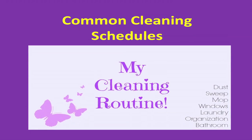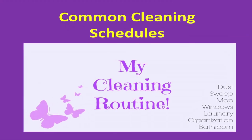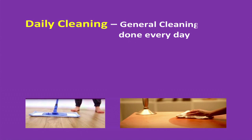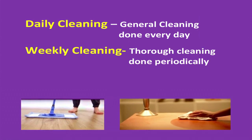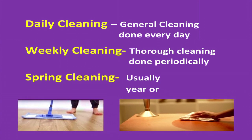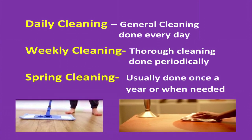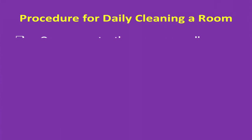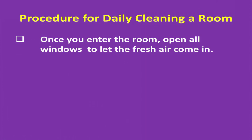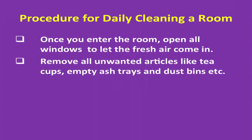Now let's study about the schedule of cleaning. Cleaning is done on three types: daily clean, a general cleaning done every day; weekly clean, a more thorough cleaning done periodically; and spring clean, usually done once a year or when needed. Procedure for cleaning a room: once you enter the room, open all windows to let fresh air come. Remove all unwanted articles like teacups, etc., and empty ashtrays and dust bins.